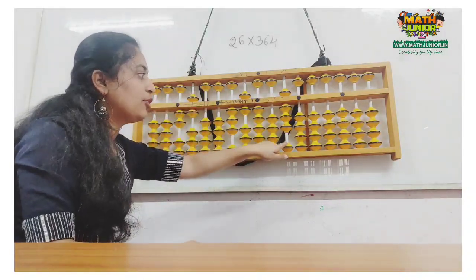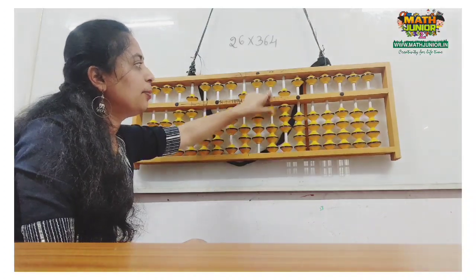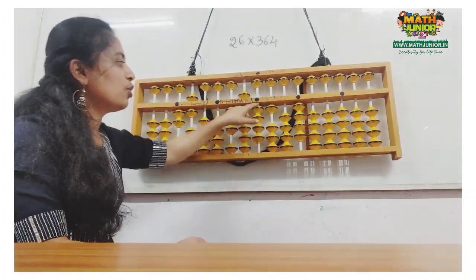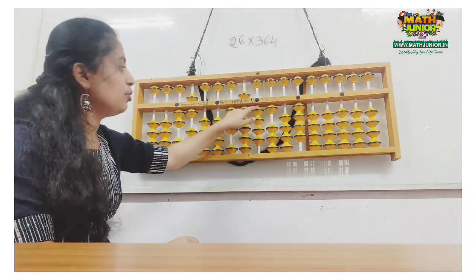Next, 4 times 6 are 24. 20 I cannot add, plus 100 minus 80, then 4 directly. So, the work with 4 is done. I remove 4 from here.